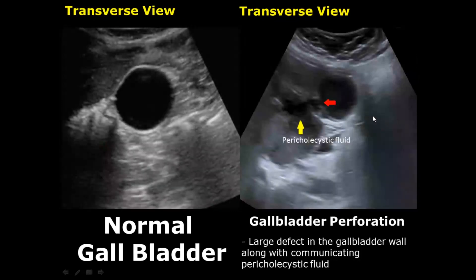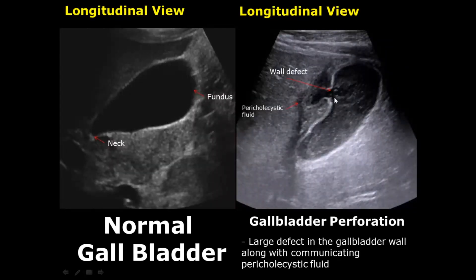In gallbladder perforation there is a large defect in the gallbladder wall, which leads to leaking of the contents outside. Here you can see communicating pericholecystic fluid due to puncture of the gallbladder wall. In the longitudinal view we can see the defect in the wall and the communicating pericholecystic fluid more clearly. This is a strong sign of gallbladder perforation.